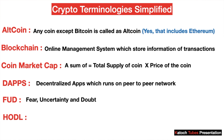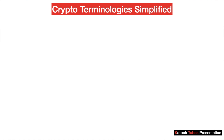Next is HODL. HODL is actually an incorrect form — ideally it means 'hold,' but due to a typo it became a famous word. It means buy and hold a coin; do not sell it. ICO: just like you have IPOs — initial public offerings — of the stock market, similarly you have ICO of the coin market, which is used to raise money. ICO means initial coin offerings.